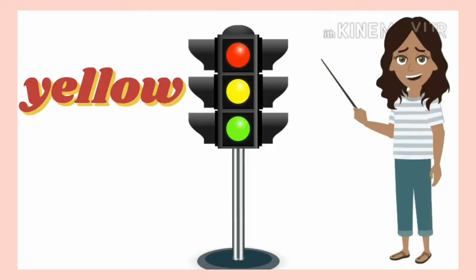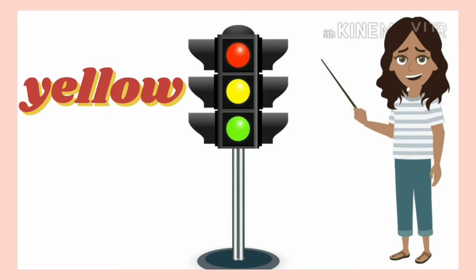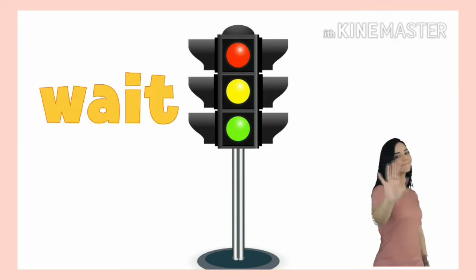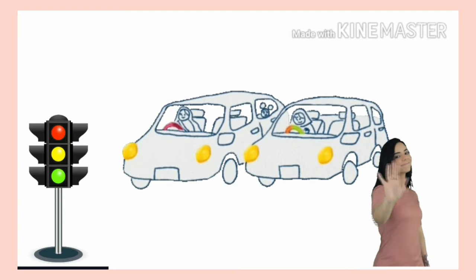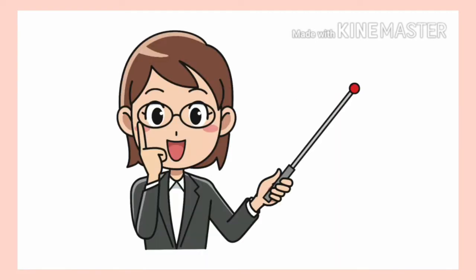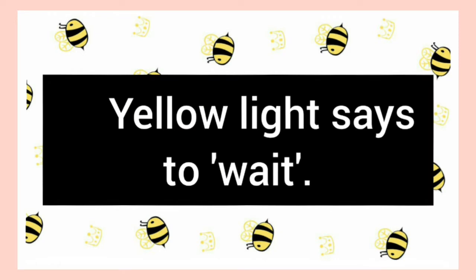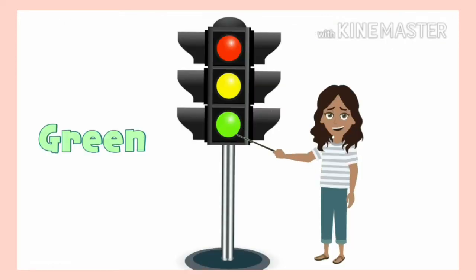The second light is the yellow light. The yellow light says to wait. That means the vehicle has to wait so it can get ready to move. Say: yellow light says to wait.